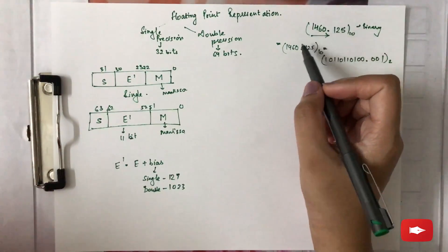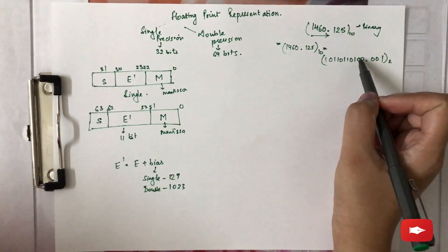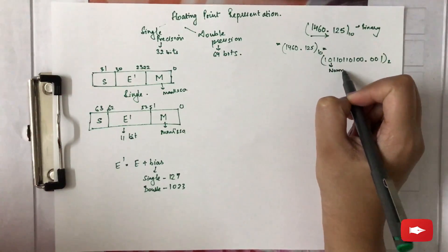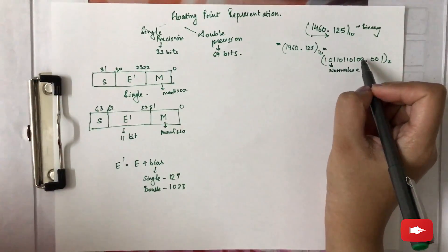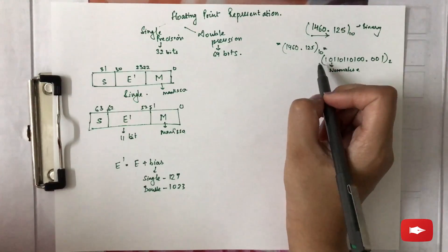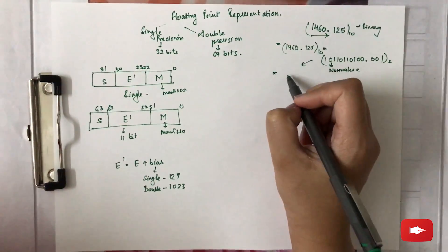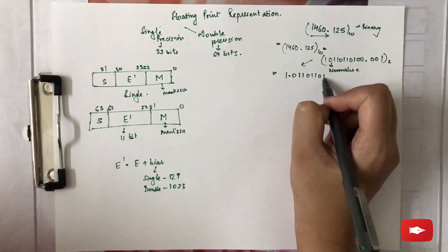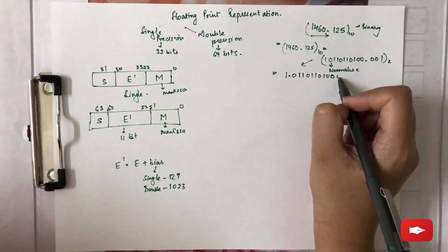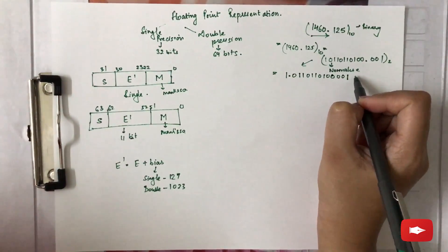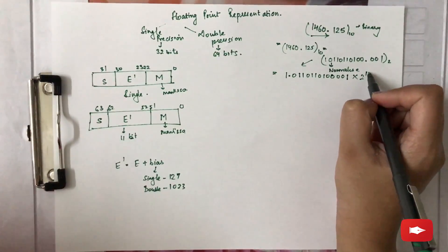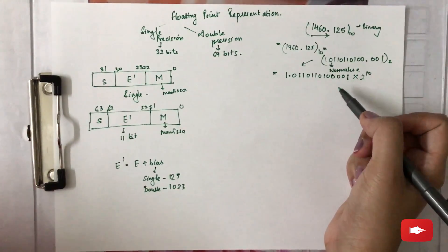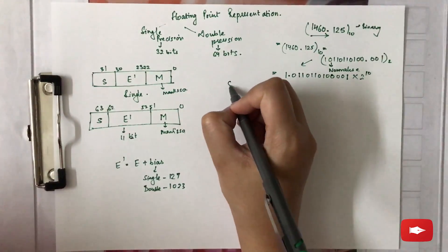After converting the decimal number to binary, you need to normalize it. As you can see, the result is not yet normalized. After normalization, it becomes 1.0110110100001 × 2^10. This is the normalized result.